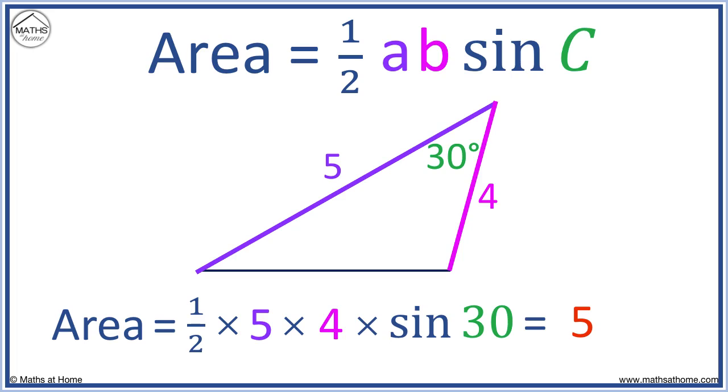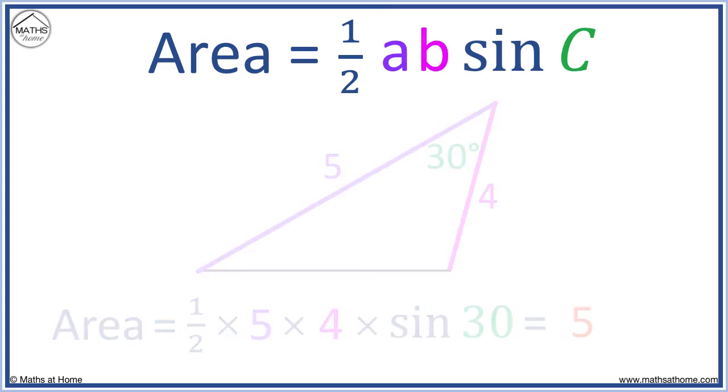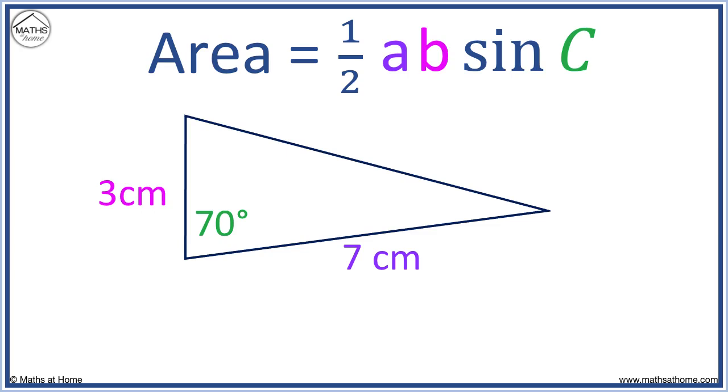Here's another example. Remember, a and b are the two sides that surround the known angle. It doesn't matter which of these sides is a or b. We will call a = 7 centimeters and b = 3 centimeters. C is the angle between the known sides, which is 70 degrees.